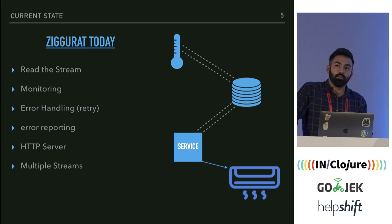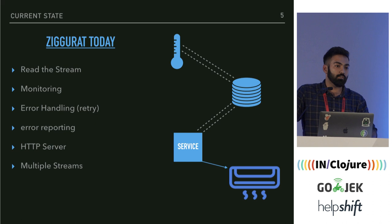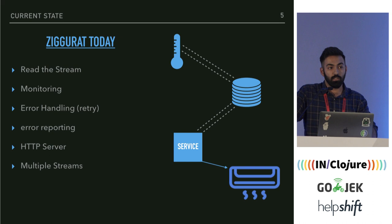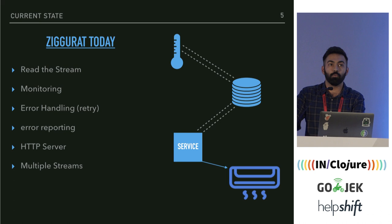You have some error handling in place and everything is working fine. Then let's say I also want manual control of the AC — so now you need an HTTP server in your service so you can manually send commands to turn the AC off or on. Then I complicate things further: I don't want the AC running when there's no one in the room. So now you need another sensor tracking the number of people in the room, and a second stream of data that your service needs to read, supporting multiple streams simultaneously.